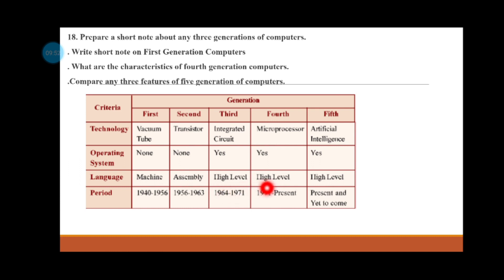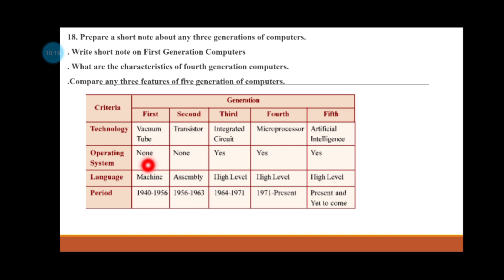The first generation used vacuum tubes. The second generation used transistors. The third used integrated circuits. The fourth used microprocessors. The fifth generation uses artificial intelligence. The durations are: 1st gen 1940s-50s, 2nd gen 1950s-60s, 3rd gen 1960s-70s, and 4th gen 1970s to present. The programming languages progressed from machine language to assembly language to high-level language.